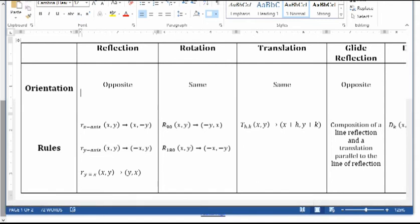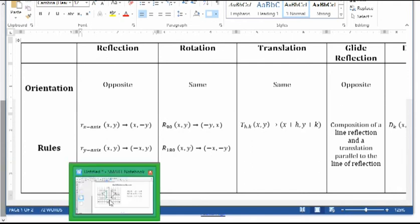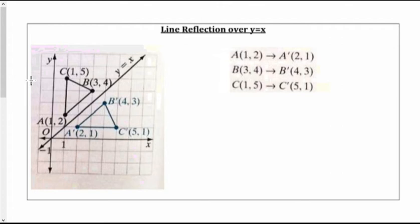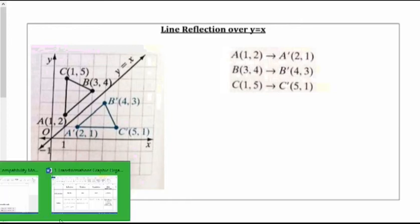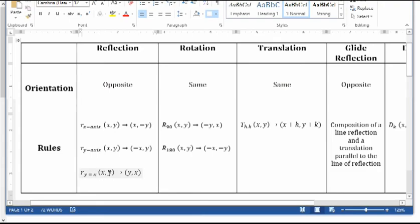And then the last one that you have to know from this is a reflection over y equals x. Y equals x goes through the origin and the slope is 1. Slope is 1, y-intercept's 0. So look, up 1, over 1, up 1, over 1, up 1, over 1. So it's that line. So here's your reflection over y equals x. And for this one, you just change the order. So 1, 2 becomes 2, 1, and 3, 4 becomes 4, 3, and so on. So those are your rules. And y equals x is down here. x, y becomes y, x. Those are the three rules that you really have to study and know for that exam in case they ask you one of them.